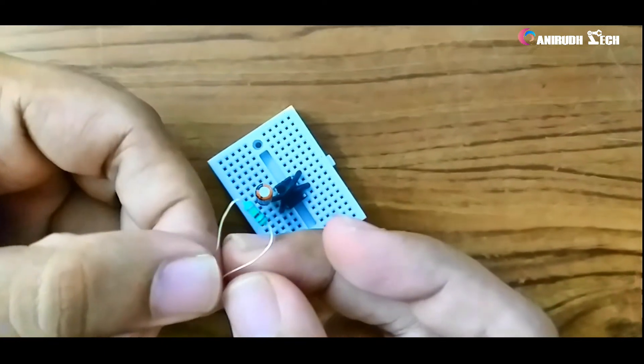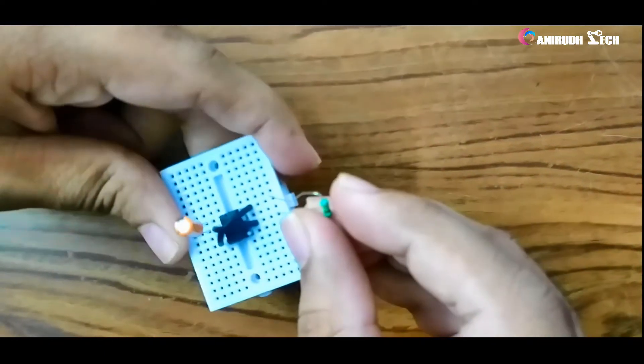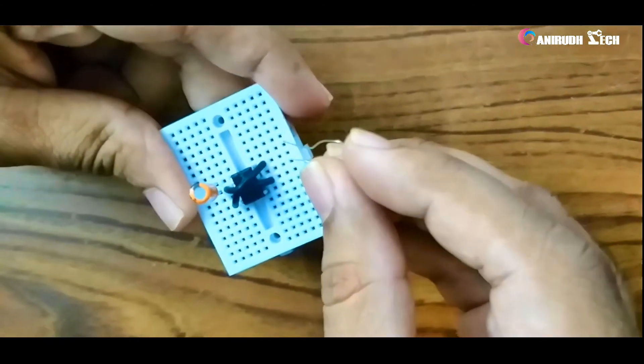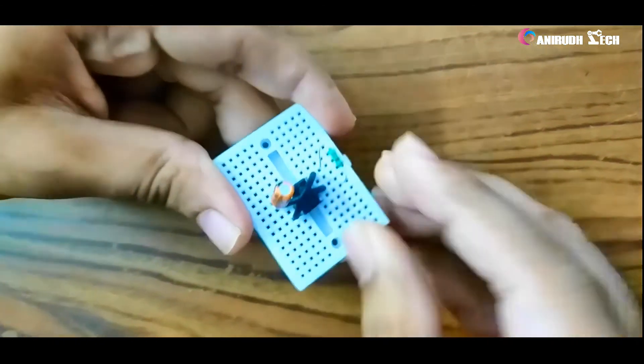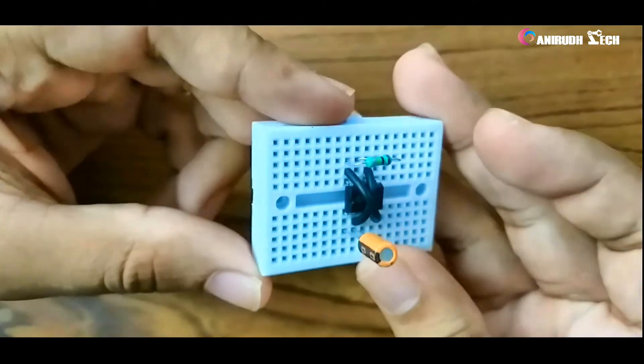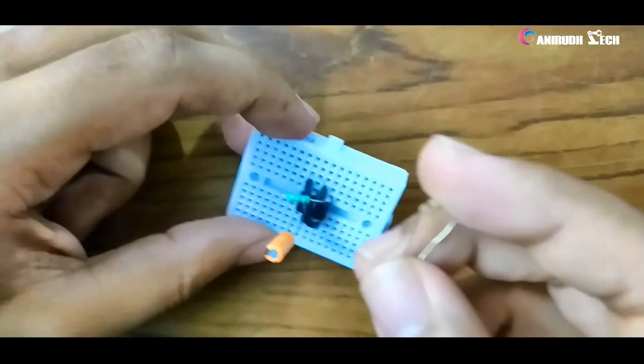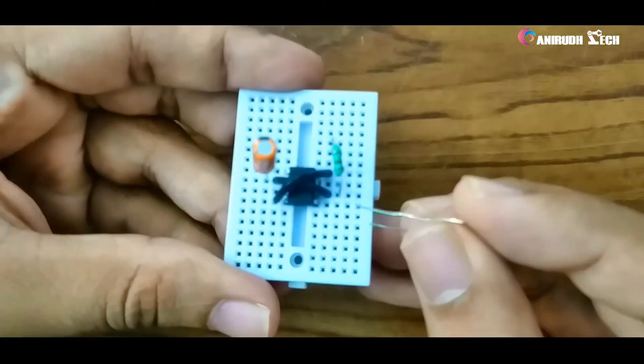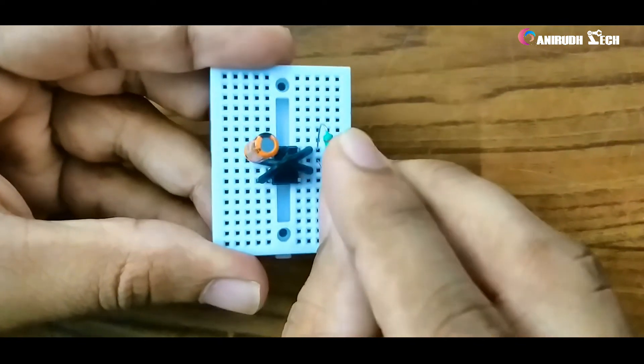Connect our 100 kilohm resistor between pins seven and eight. This is eight, so this is seven. Now we can connect the 10 kilohm resistor between pins six and seven.